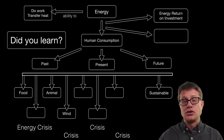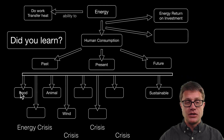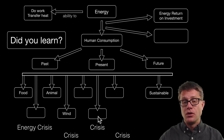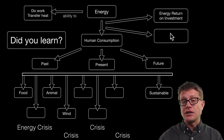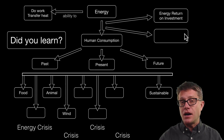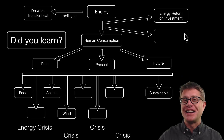So did you learn the following? Could you pause the video and fill in the blanks? Energy consumption over time went from food, to wood, to animals and wind, then to coal, oil, and gas — with energy crises associated with each as supply decreases and price increases. Finally, we have to consider not only the return on investment but also the externalities: what cost do we impose on society by using fossil fuels and non-renewables? I hope you learned all of that and found it helpful.